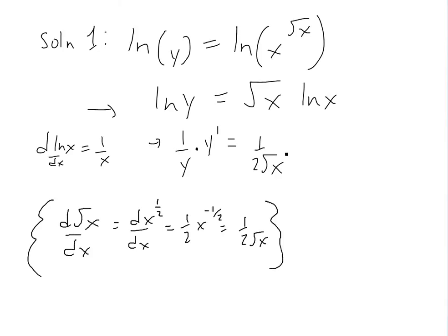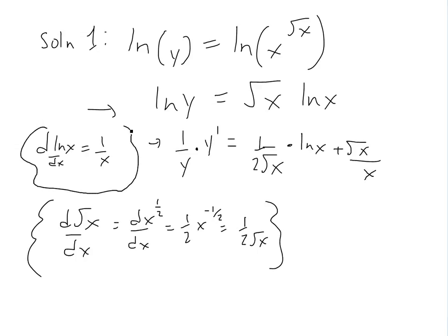Continuing with the product rule on the right side: we have the derivative of square root of x, which is 1 over 2 square root of x, multiplied by ln of x. Then we add square root of x times the derivative of ln of x, which is 1 over x.